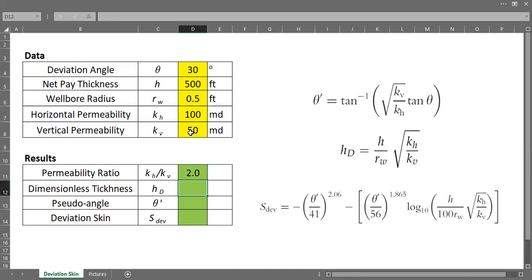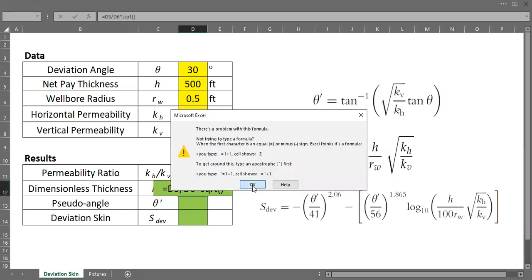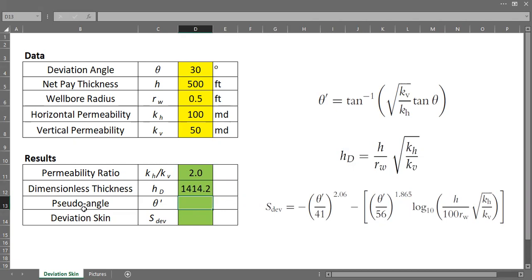And we also have the efficient thickness. We will use this formula. So HD, or dimensionless thickness, is H 500 divided by wellbore radius 0.5, multiplied by the square root of permeability ratio. And in this formula, the permeability ratio is KH by KV. So in Excel, I will type in SQRT, open, and the number will be 2. So the dimensionless thickness is 1414.2.